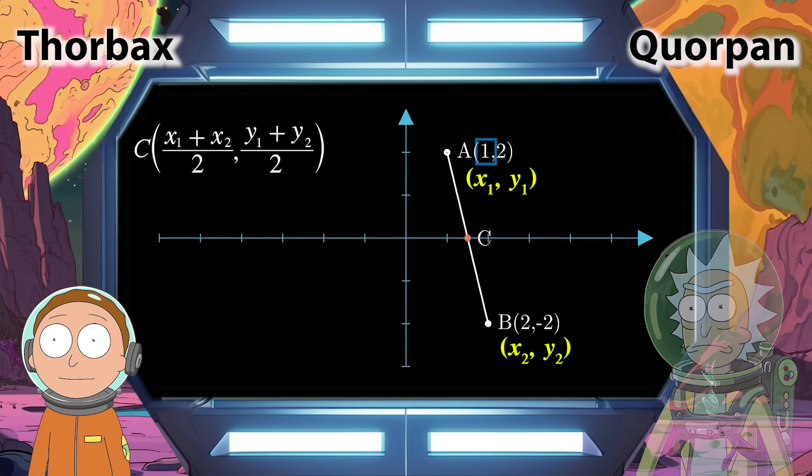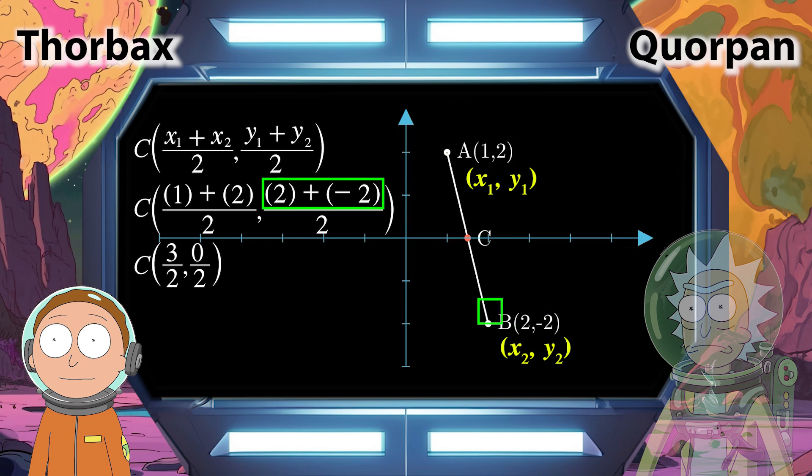Okay, geez, so like if X1 is 1 and X2 is 2, then X1 plus X2 equals 3. And if Y1 is 2 and Y2 is negative 2, then Y1 plus Y2 equals 0. And since 3 over 2 equals 1.5 and 0 over 2 equals 0,